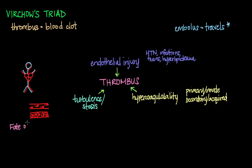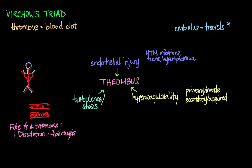Once a thrombus has formed, one of four things can happen. First, the thrombus can dissolve through the process of fibrinolysis — basically the breaking up of the fibers that make up the clot. The younger the clot, the easier it is to dissolve with thrombolytic agents such as tissue plasminogen activator, which is why one indication for this medication is that the clot is less than four and a half hours old.